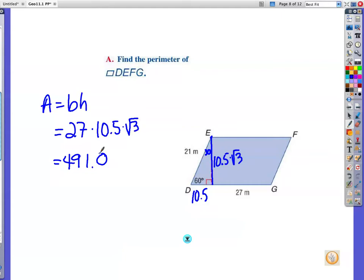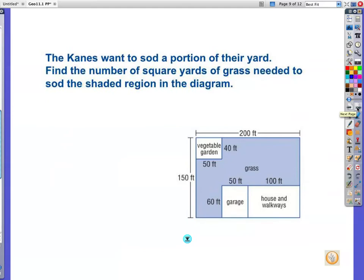Alright, I would normally ask if there are any questions on that, but you can ask in class. Moving on to the next one. The Kanes want to sod a portion of their yard. Find the number of square yards of grass needed to sod the shaded region in the diagram. Okay. So, you're going to work at this. There's lots of things you can do. You can divide this up into little sections. Find the area of each section. But I think my favorite is to take the full area and subtract out these pieces.